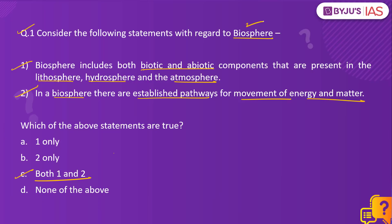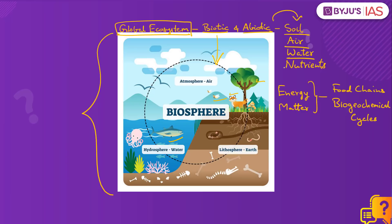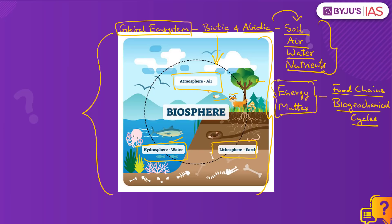In order to answer such static questions, you need to know the definition and concept of biosphere. The biosphere is a global ecosystem made up of both biotic and abiotic components. The biotic components include all living beings such as plants, animals, birds and aquatic animals. The abiotic components include soil, air, water and nutrients found in the lithosphere, hydrosphere and the atmosphere. Within this biosphere, there are established pathways such as food chains and biogeochemical cycles through which energy and matter move throughout the biosphere.